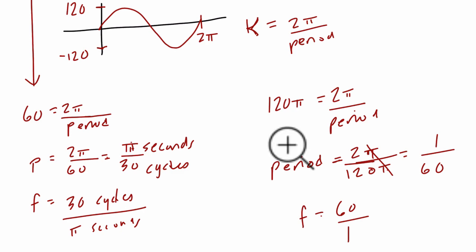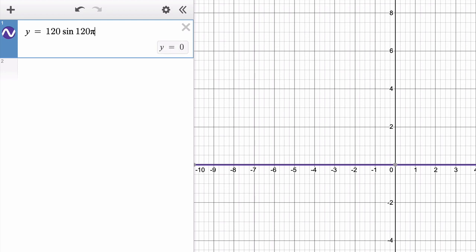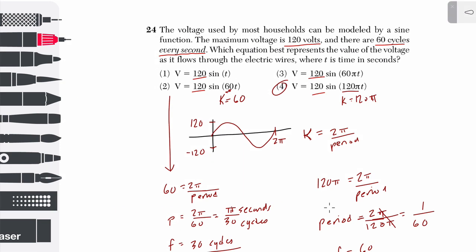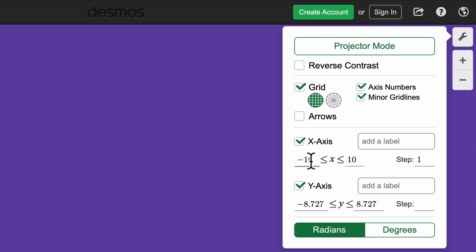Now to understand that on a graph, let's just take a look so you can understand this. Let's say we have y equals 120 sine of 120π x. Is that right? Okay. Wow. So we can't see anything here, so let's fix our window. Let's say that x goes from, let's do one cycle, zero.